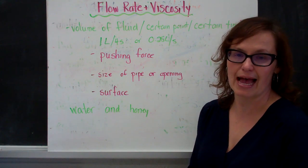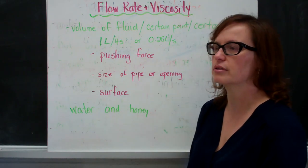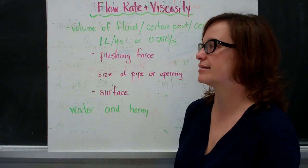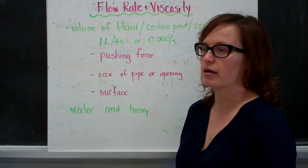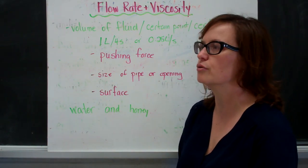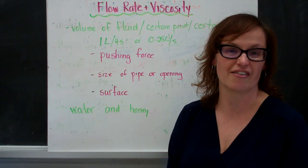If you think about turning on the tap, and if you measured how much water came out over a certain period of time, you might say one liter comes out of the tap every four seconds, or 0.25 liters comes out every second.